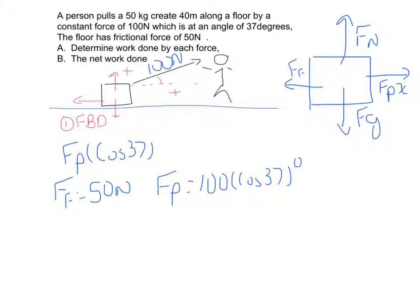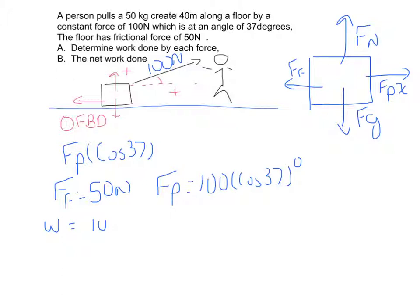Since it's not moving up or down, the work done by the normal force is zero joules. Now for the work of the push: force times distance, with 40 meters given. The work of the pull equals approximately 3200 joules.